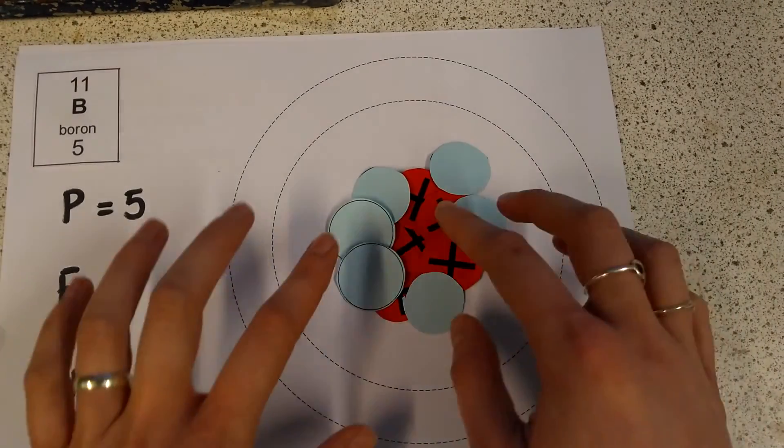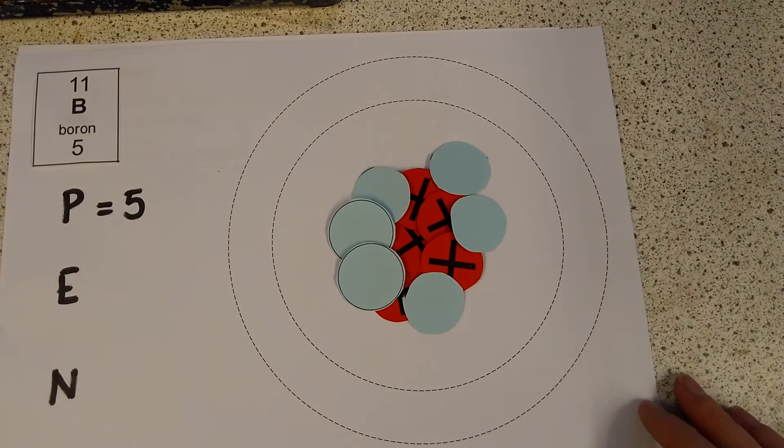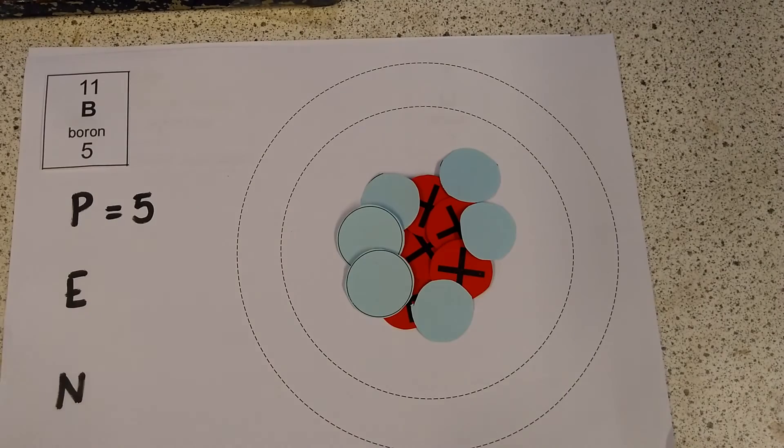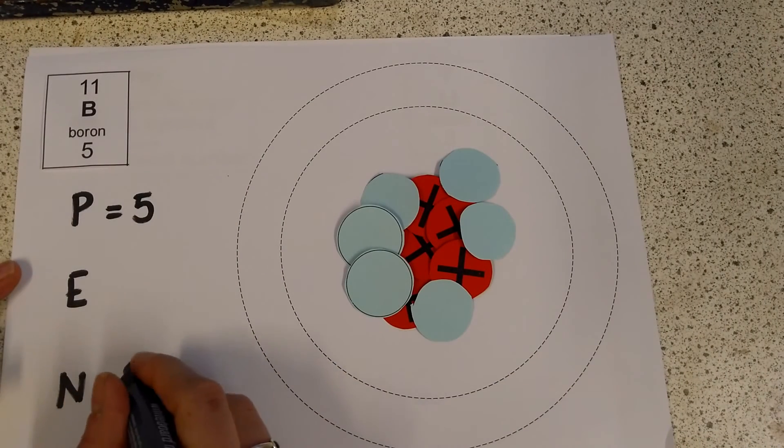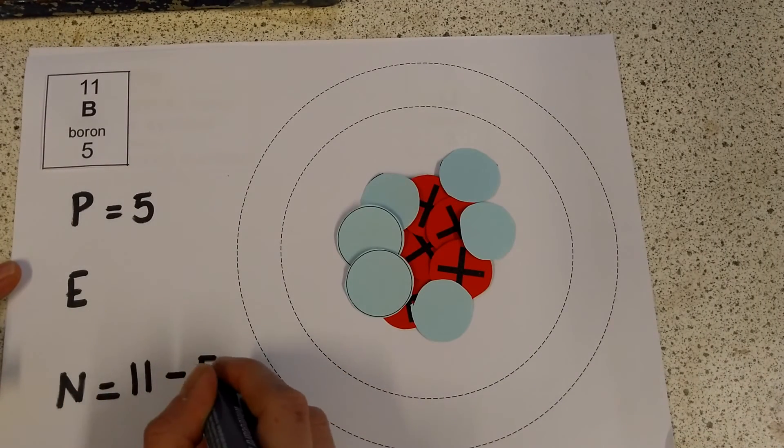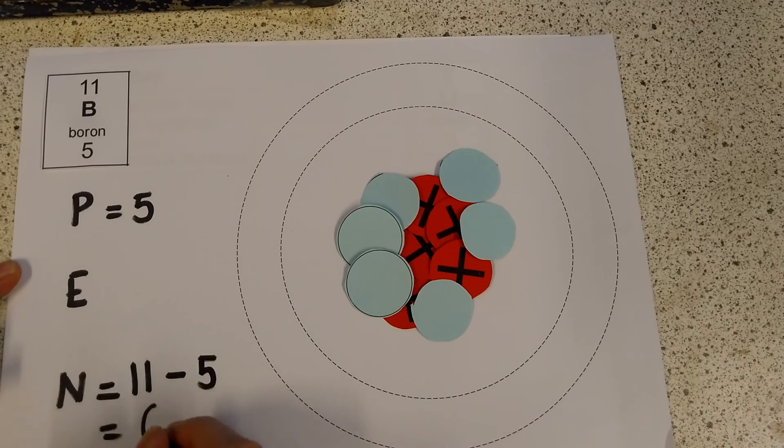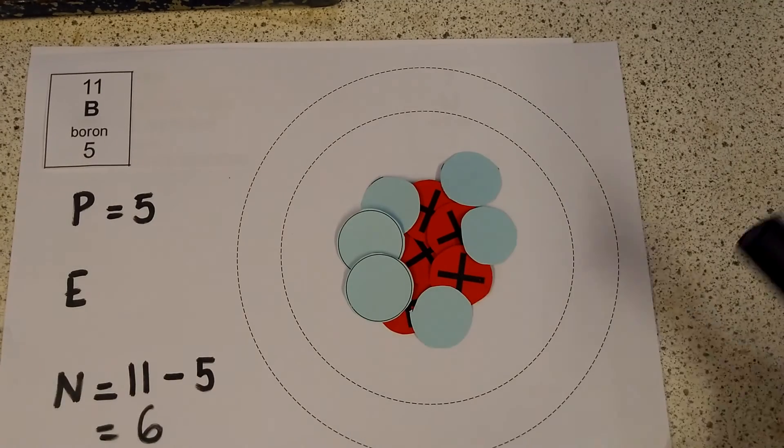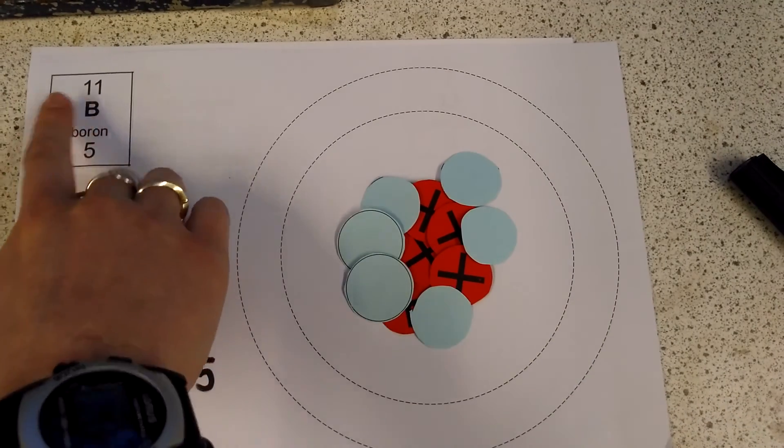And really, I should have these kind of spaced out a little bit so that they're breaking up those protons because they don't want to be all together like that. But we won't worry too much for now. So for my neutrons, I did 11 take away 5, and that meant I needed to add 6 neutrons. So I've got 11 things in total here in my nucleus because the mass is 11.